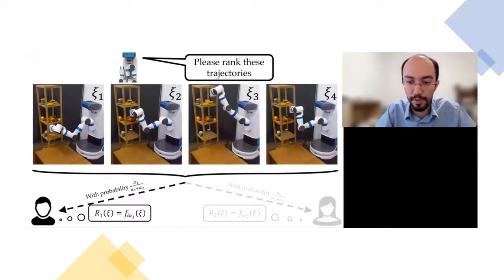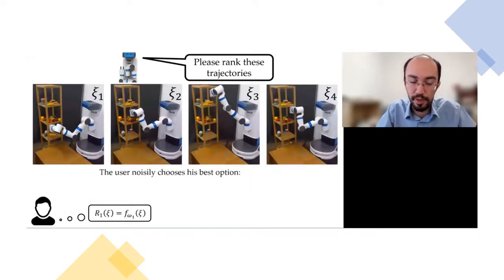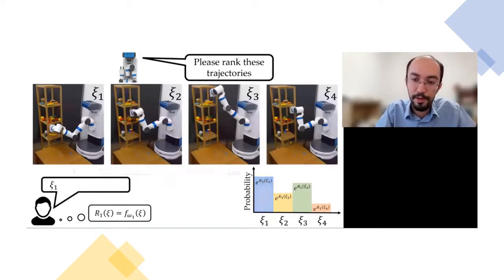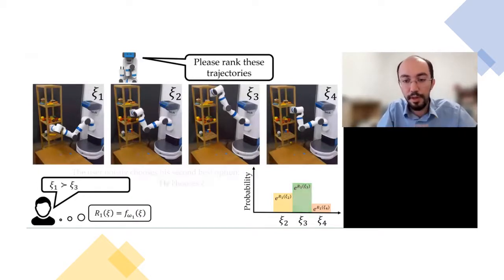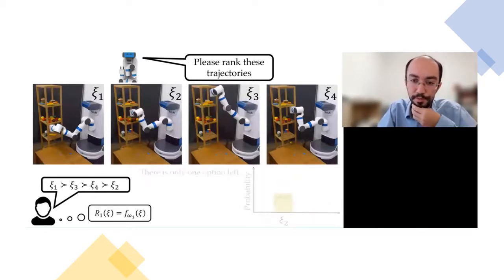Let's say the first user responds to a query — our robot doesn't know this. The human will first noisily select his best option from a softmax distribution over the rewards, then noisily choose his second best from the remaining options, and repeat for the third. This response model for a single user is known as Luce's choice axiom, a very standard model for rankings by humans. What our robot observes is only the final ranking — it doesn't know which user gave it or the probability that this ranking came from a given user.